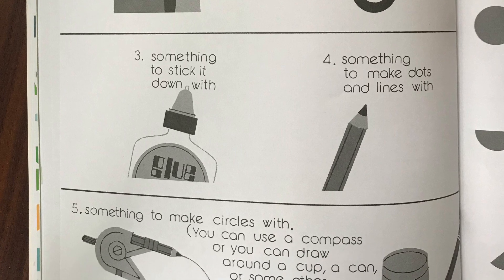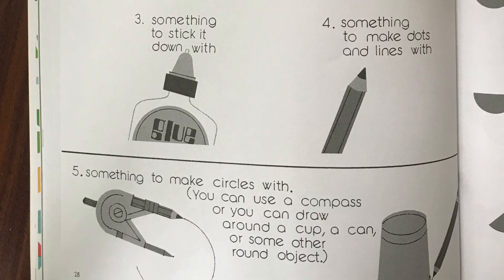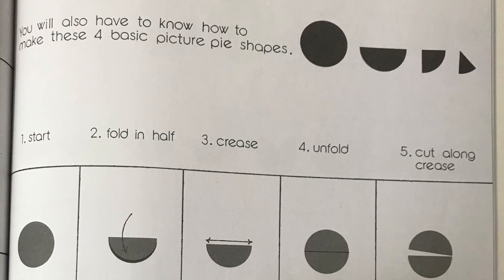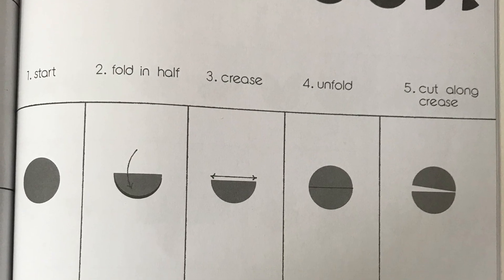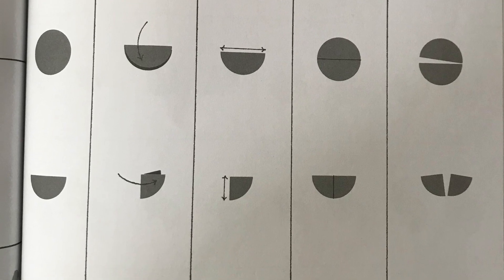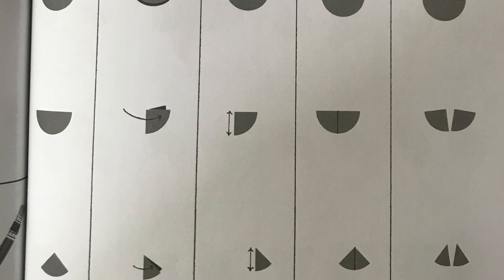You can use a compass or you can draw around a cup, a can, or some other round object. You will also have to know how to make these four basic picture pie shapes. Start, fold in half, crease, unfold, and cut along the crease.